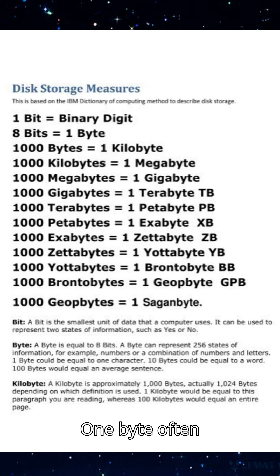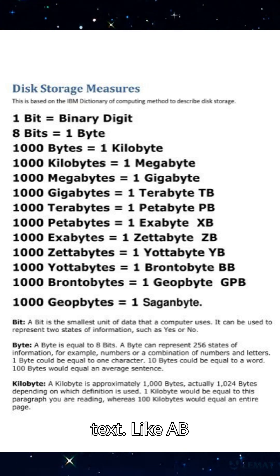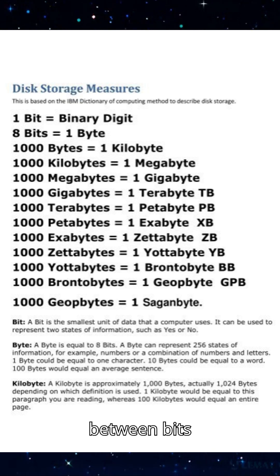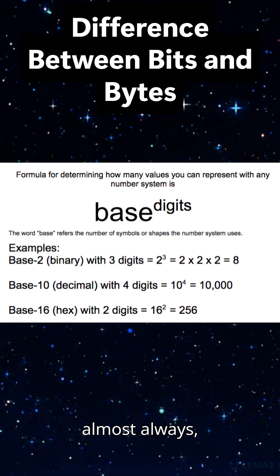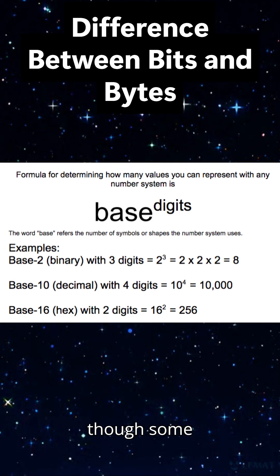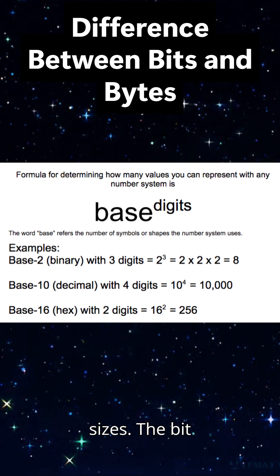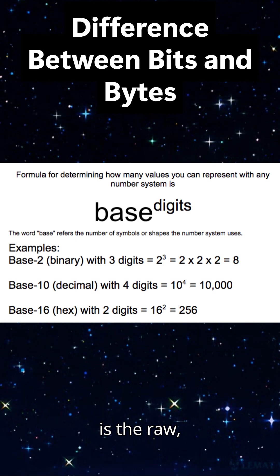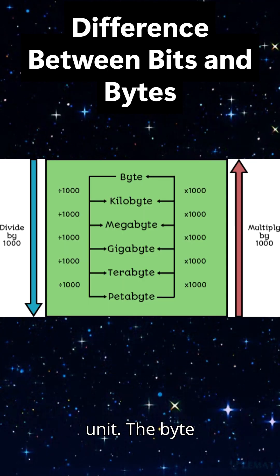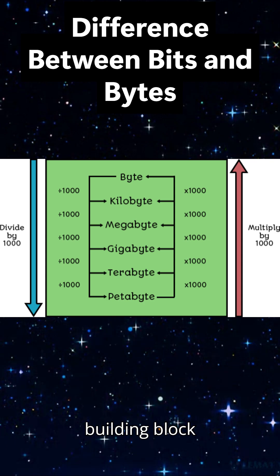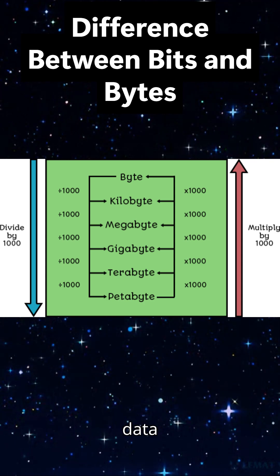One byte often corresponds to a single character in text, like A, B, or @. The relationship between bits and bytes: one byte equals eight bits — almost always, though some older systems use different sizes. The bit is the raw, lowest level unit. The byte is the standard building block for larger data structures.